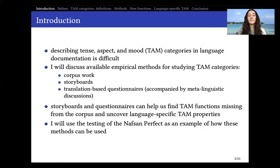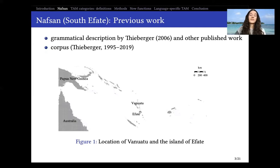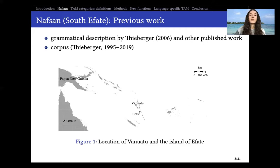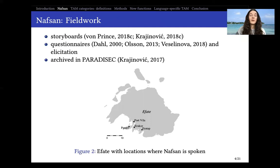I will use the Nafsan perfect as an example of this. Nafsan is spoken on the island of Efate in Vanuatu, and it has been previously described by Nick T. Berger in his grammatical description in 2006. There is also other published work, and importantly Nick T. Berger produced a large corpus based on his fieldwork elicitations and collections of natural texts, which was a very important starting point for my work on Nafsan. This corpus is archived in PARADISEC and can be consulted freely.